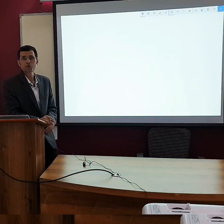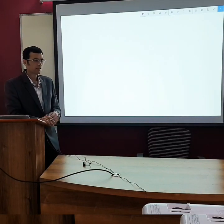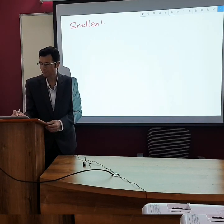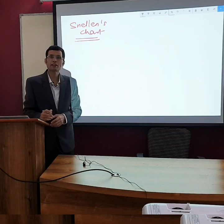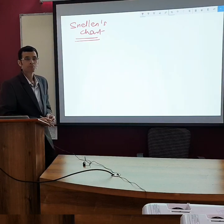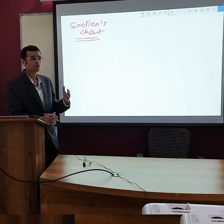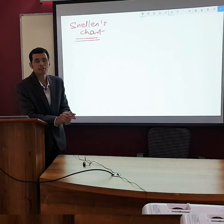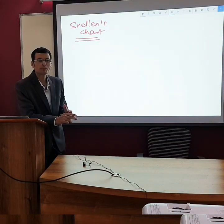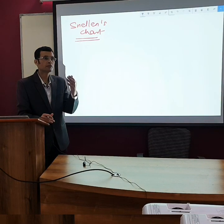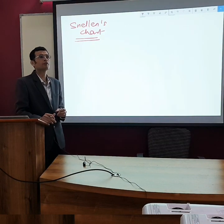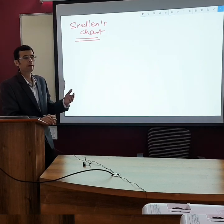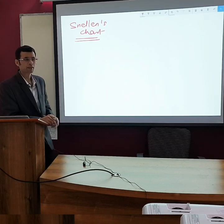How do we test our visual acuity? The chart used is called Snellen's chart. Visual acuity means being able to read the fine details of an object, to see details very clearly, or to be able to identify two points separately. That's visual acuity.